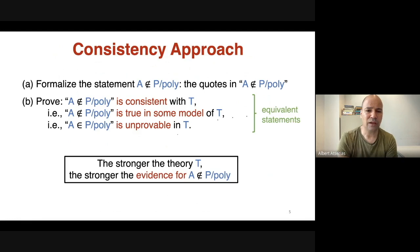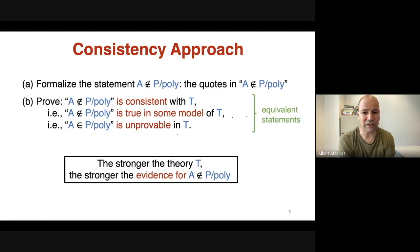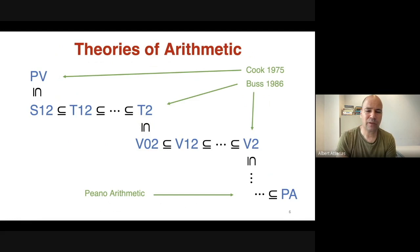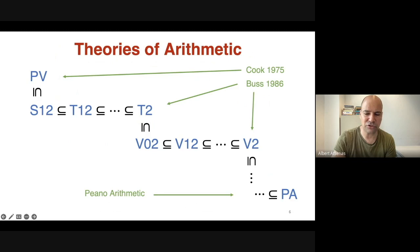It should be evident that the stronger the theory T, the stronger the evidence that A is not in P/poly — as long as we prove consistency. For example, if T happened to be the theory of all true statements of arithmetic, then proving consistency with respect to that is actually proving outright that A is not in P/poly.